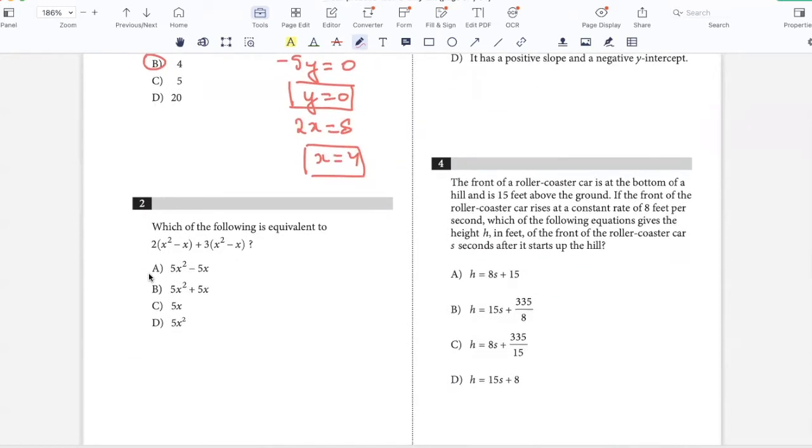Which of the following is equivalent to this expression? I have 2 times x squared minus x plus 3 times x squared minus x. So that's 5 times x squared minus x, which is 5x squared minus 5x. Option A.